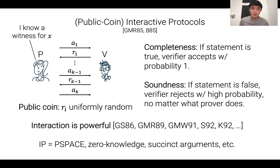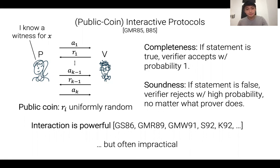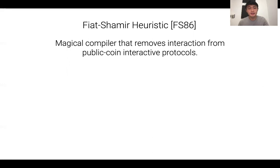We know that interaction is really powerful — you can prove anything in PSPACE, prove things in zero knowledge, and prove things succinctly. But interaction is also quite impractical; it's unwieldy to require two parties to wait for each other's messages. So whenever possible, we want to do things non-interactively. That brings me to the Fiat-Shamir heuristic, which in a nutshell is a magical compiler that somehow removes interaction from public coin interactive protocols.